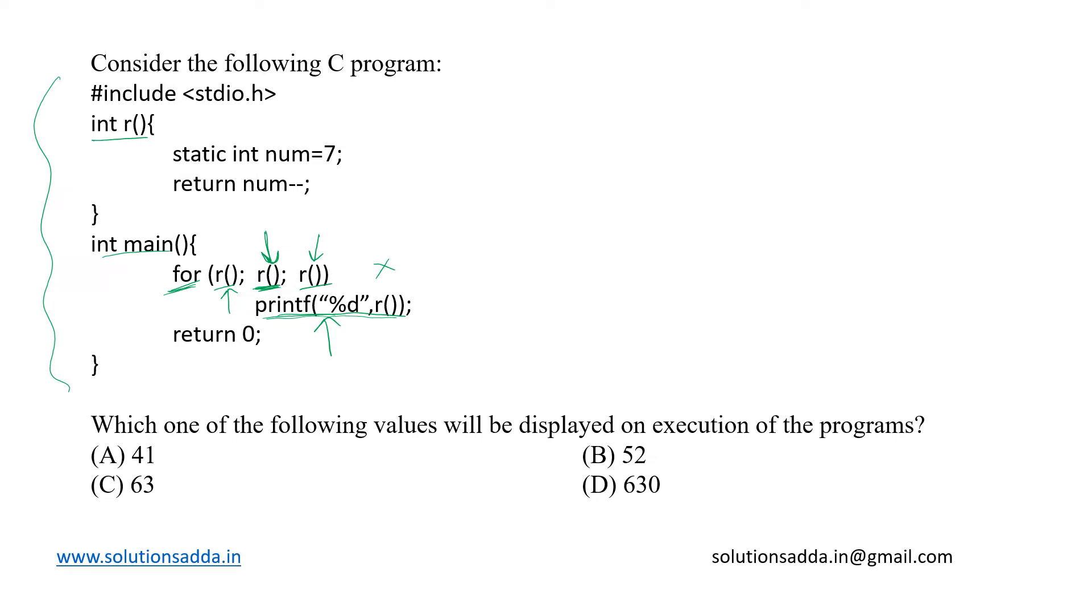Now let us look at this function R. What it is doing? It is having a static variable int num initialized to 7 and what it is returning is num minus minus, which means the value of num with post decrement to it.